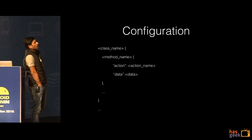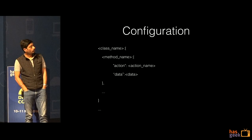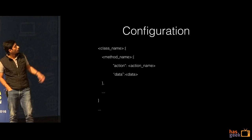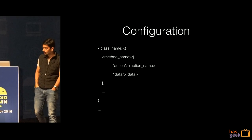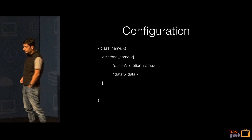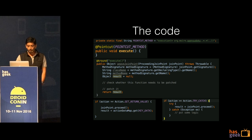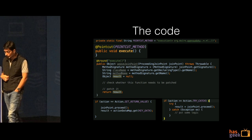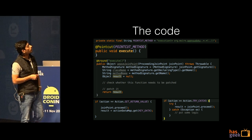This could be a sample configuration: it comes from the server and will have the name of the class, the name of the method, the action, and the data. Looking at the code, the first line is the point-cut — the expression. This lets you control which function the advice runs on.